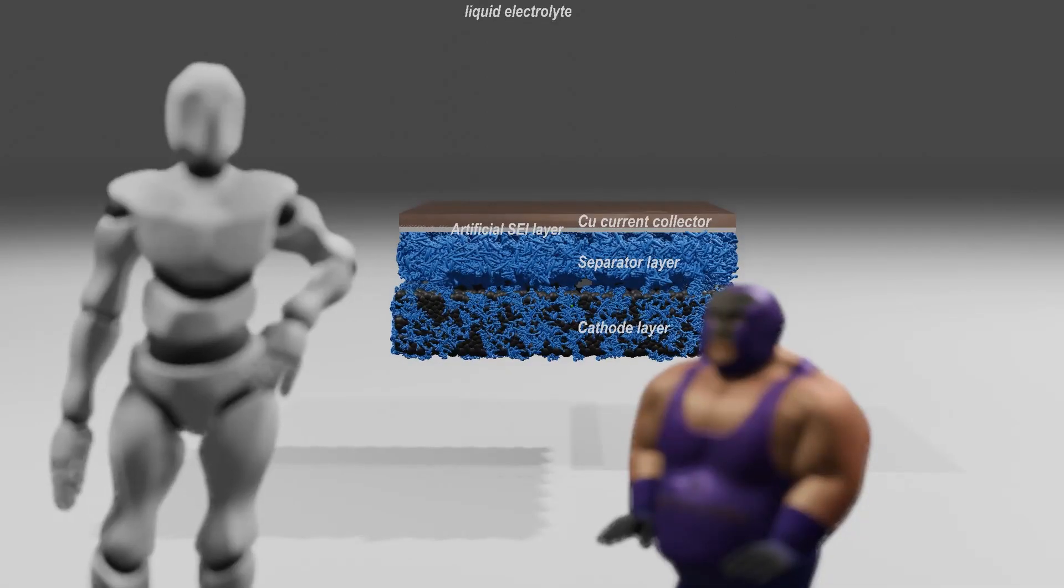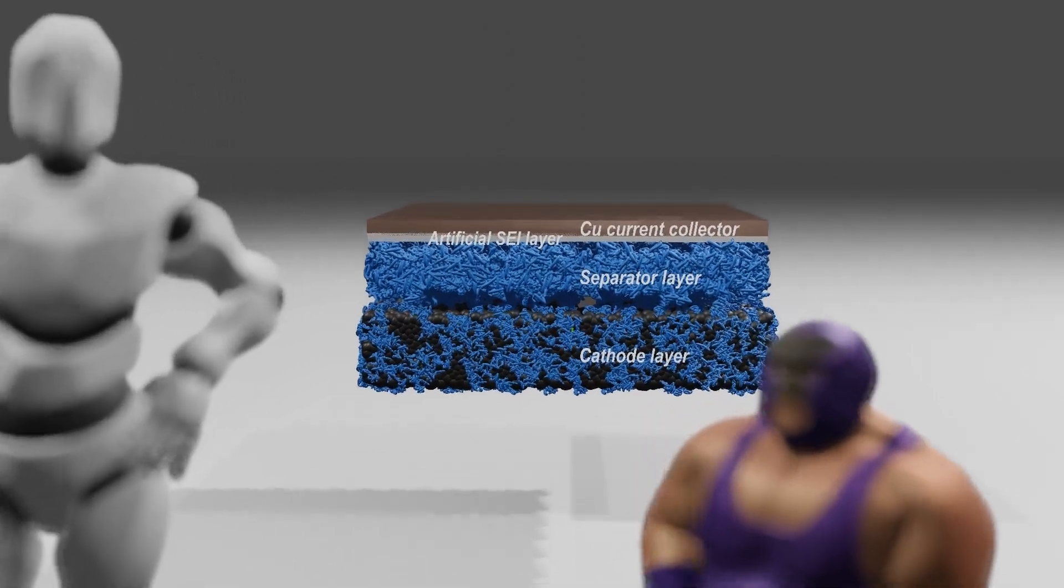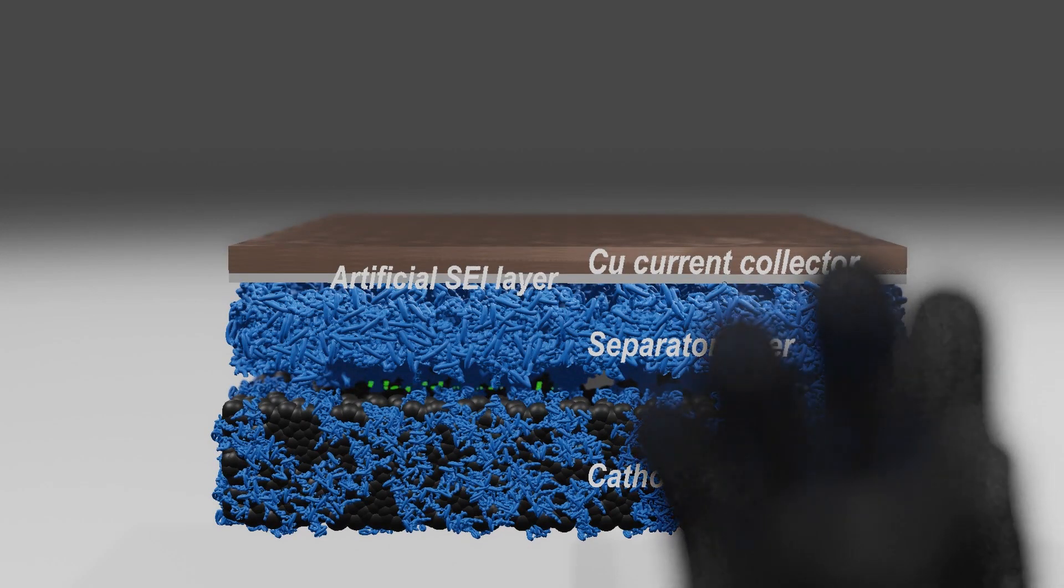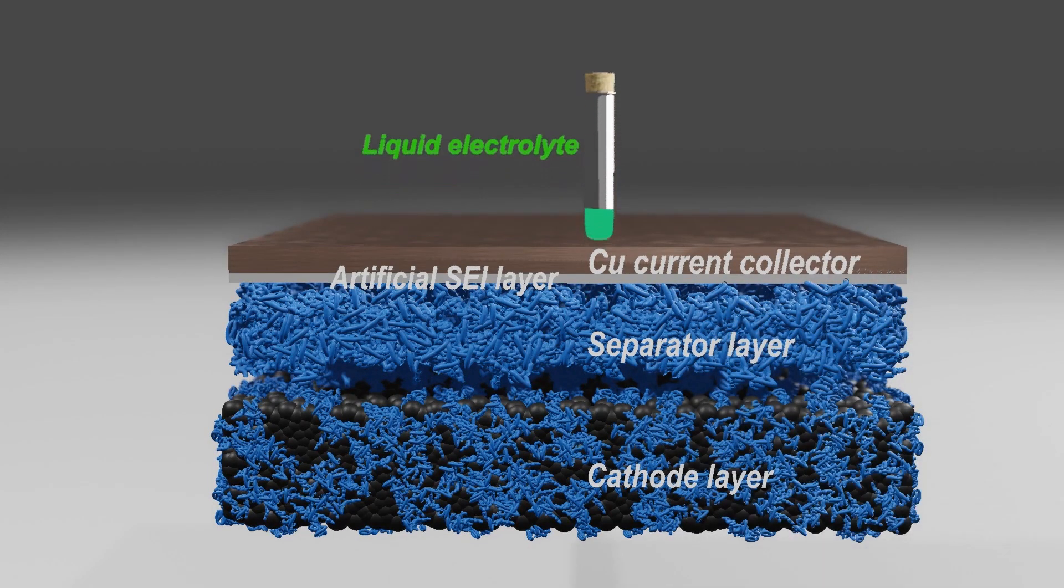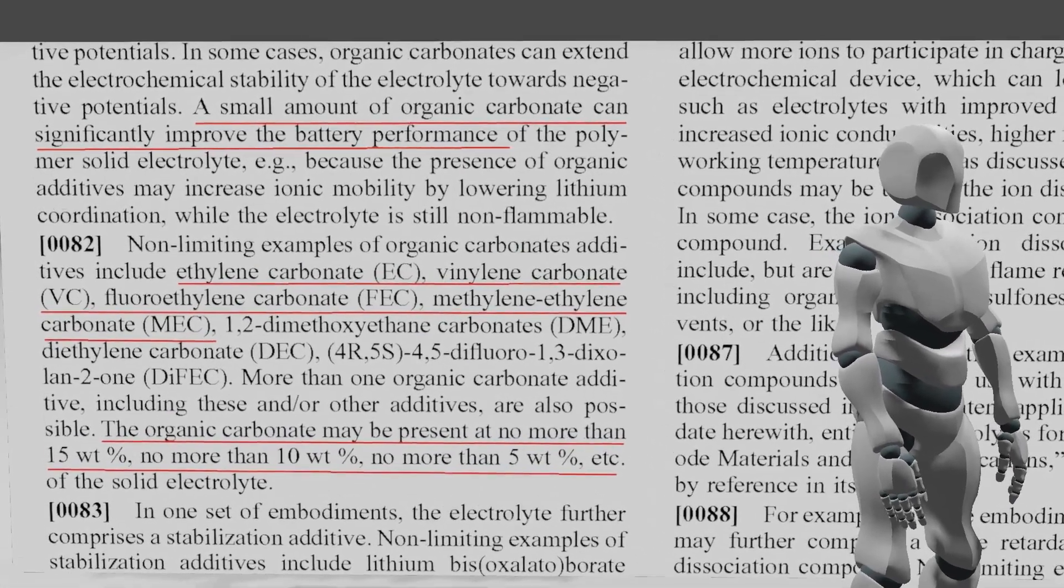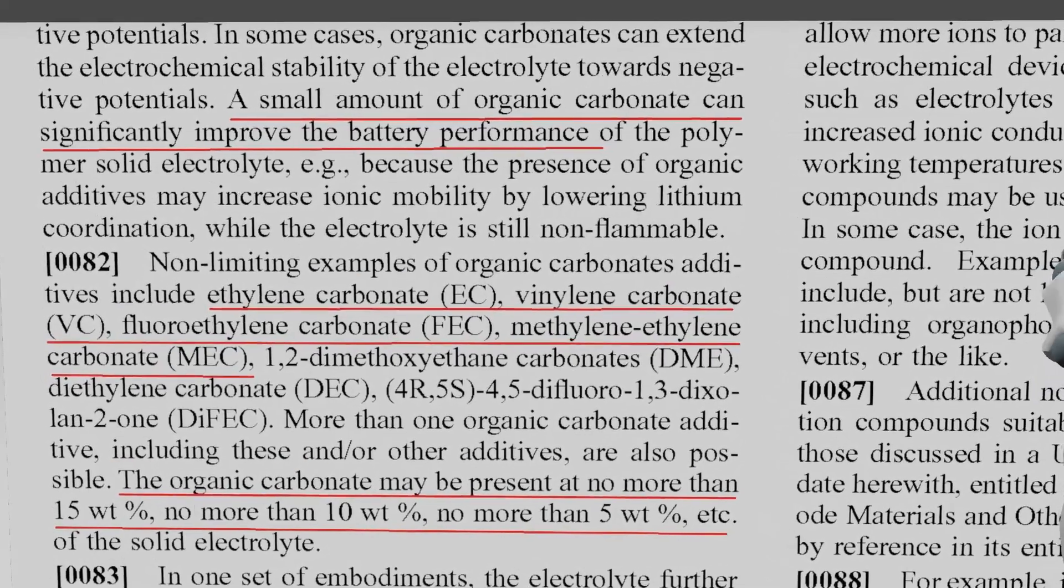If that's the case, the car companies couldn't have invested huge sums of money. They used some kind of trick to solve it: a small amount of liquid electrolyte is added as an additive. Judging from the patent, it seems that a liquid electrolyte that accounts for 5 to 10 percent of the polymer electrolyte was injected.